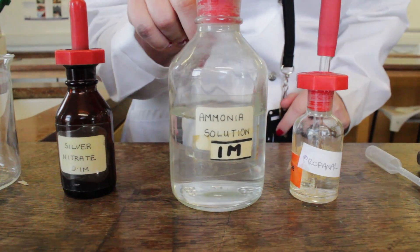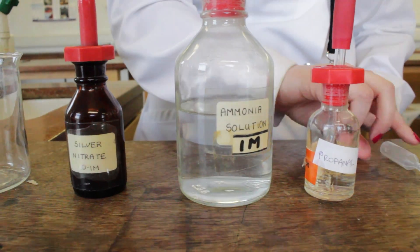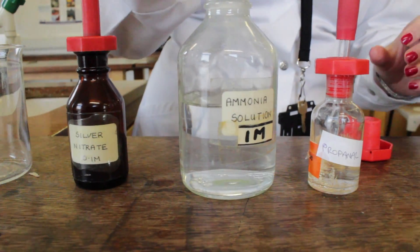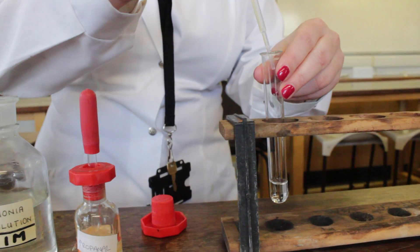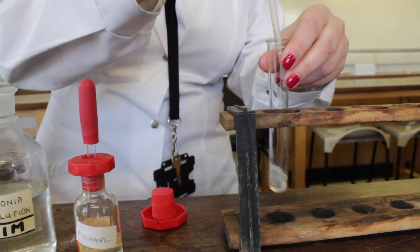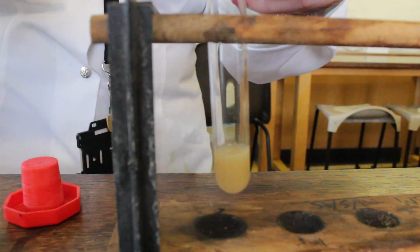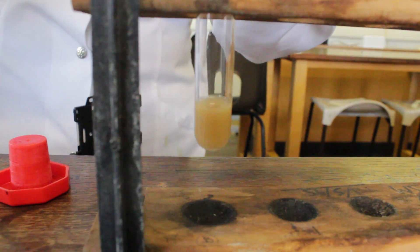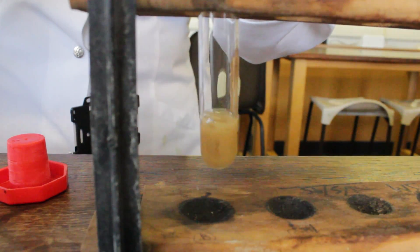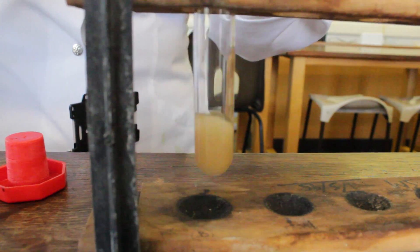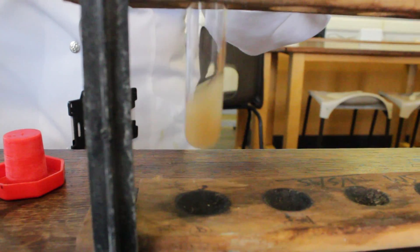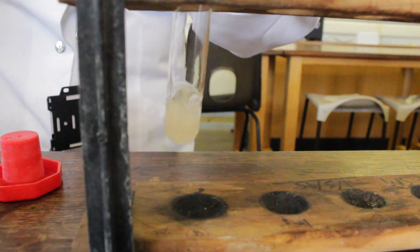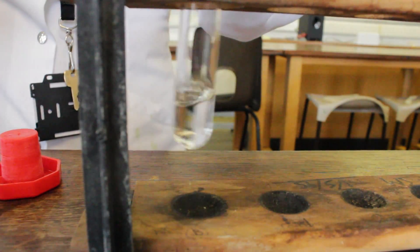We're now going to add the ammonia solution. It's important to add this drop by drop. As you add it drop by drop, give it a shake. You should see initially a precipitate of silver oxide forming. There we go, and then it disappears.